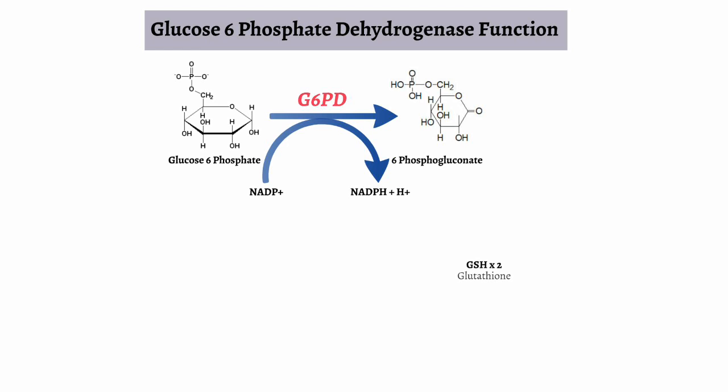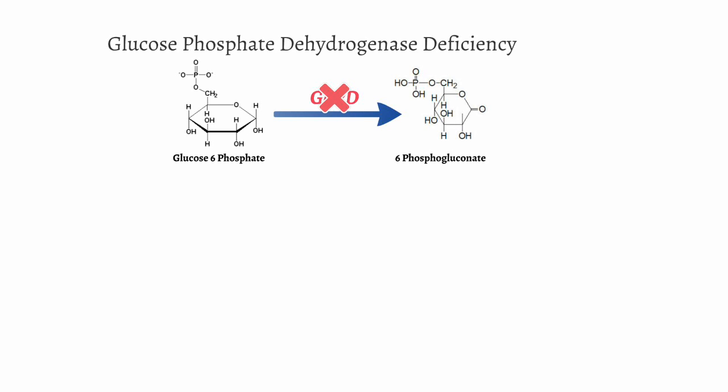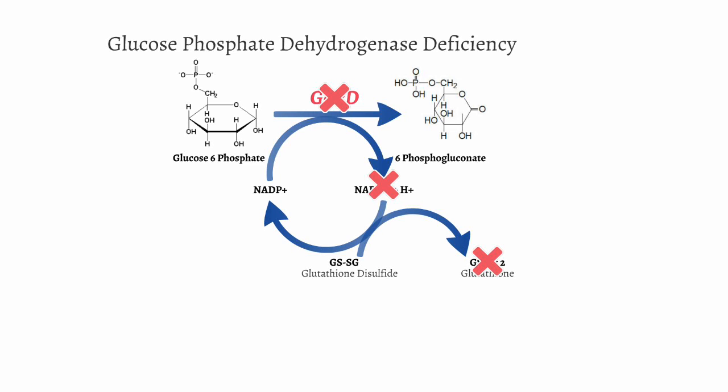Within RBCs, there is a molecule called glutathione. Glutathione reduces oxygen radicals, producing alcohols and water, thereby preventing oxygen radicals from destroying the cell. When glutathione is oxidized, it is used up and forms glutathione disulfide. In order for glutathione to be recreated, NADPH and the hydrogen atom reduce glutathione disulfide to create two molecules of glutathione again. In G6PD deficiency, the lack of G6PD prevents the production of NADPH, and thus glutathione cannot be regenerated. If glutathione is not available to reduce oxygen radicals, these radicals cause severe cell damage leading to cell death.